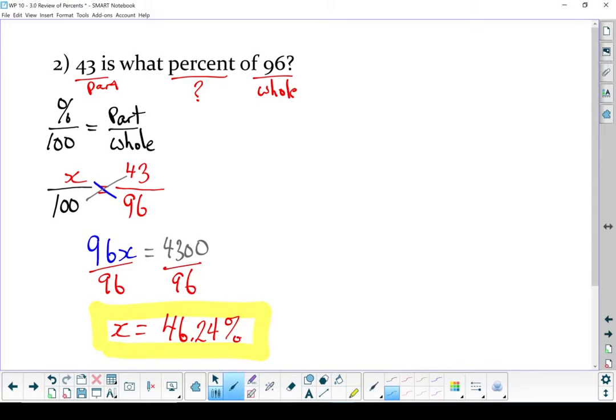If I read it out in words, it says 43 is 46.24% of 96.